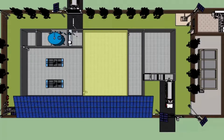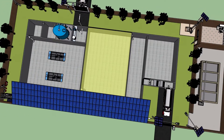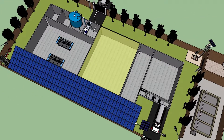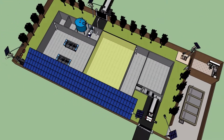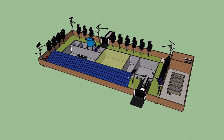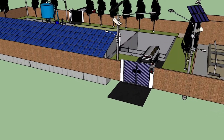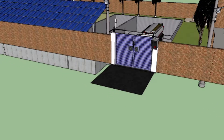Welcome to the presentation on faecal sludge and septage treatment plant. This video gives a comprehensive overview of the process involved in the treatment of faecal sludge and septage. Fecal sludge and septage is collected from the septic tanks periodically and transported to the treatment plants, available in raw, partially digested slurry and semi-solid form.